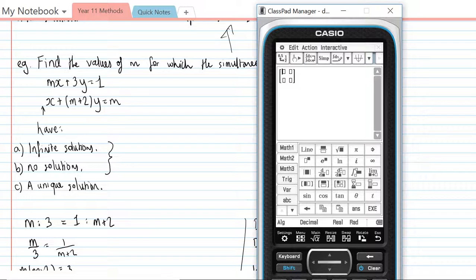In that matrix I'm going to put in, obviously the coefficients, so I'm going to put in m, 3, 1, and m plus 2. There we have it.